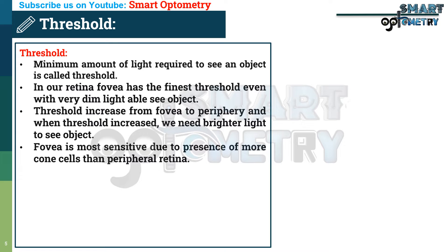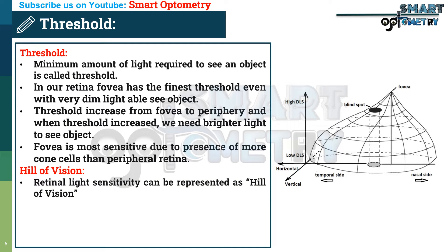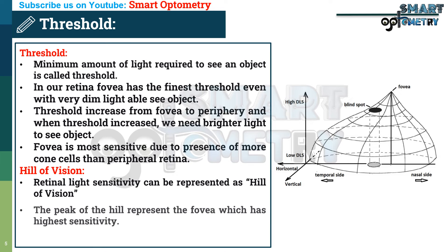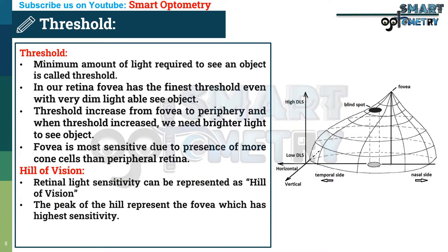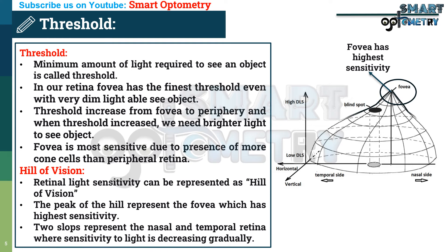The fovea is the most sensitive due to the presence of more cone cells than the peripheral retina. Retinal light sensitivity can be expressed as the Hill of Vision. The peak of the hill represents the fovea, which has the highest sensitivity. The two slopes represent the nasal and temporal retina, where sensitivity to light is decreasing gradually.